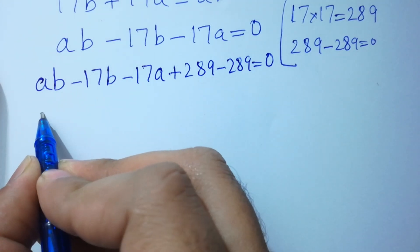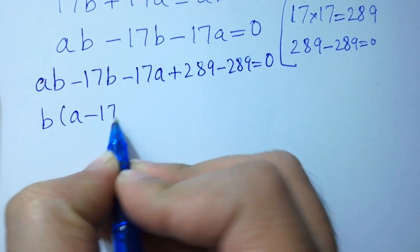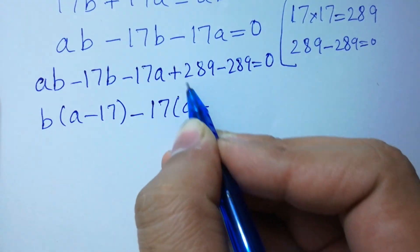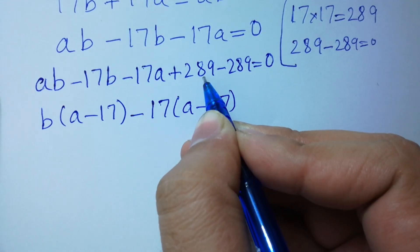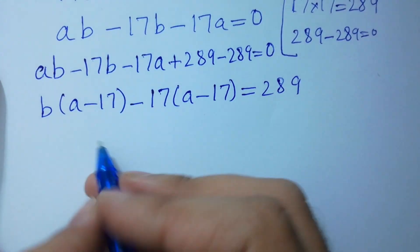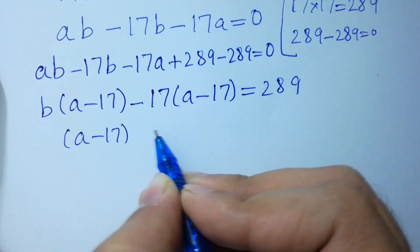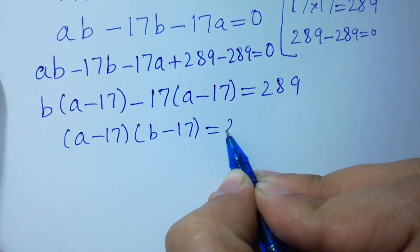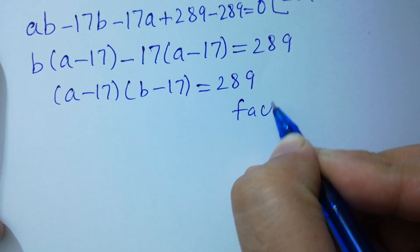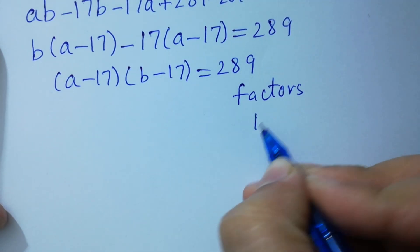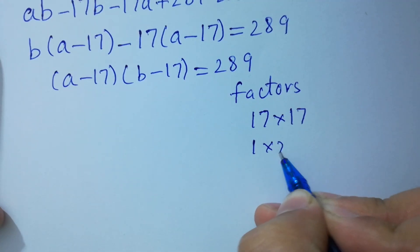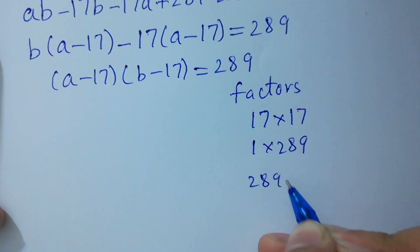We factor this expression. Taking b common: b times (a minus 17) minus 17 times (a minus 17) plus 289 equals 0, which gives (a minus 17)(b minus 17) equals 289. The factor pairs of 289 are: 17 times 17, 1 times 289, and 289 times 1.